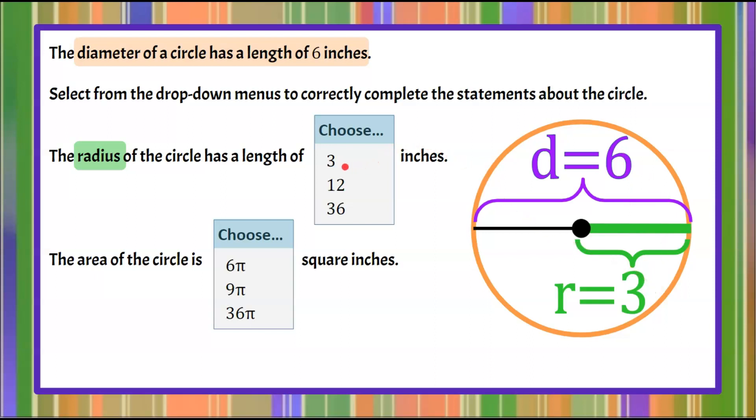So here we know that our radius of this circle with a diameter of six is going to have a radius of three inches. Our second part asks us to find the area of a circle. The formula for area of a circle, which is this shaded pink region here, is going to be the area equals pi multiplied by r squared.